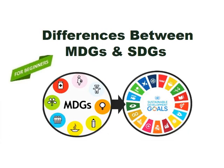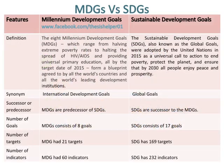MDGs versus SDGs. The eight Millennium Development Goals, MDGs, which range from halving extreme poverty rates to halting the spread of HIV or AIDS and providing universal primary education, all by the target date of 2015, form a blueprint agreed to by all the world's countries and all the world's leading development institutions.